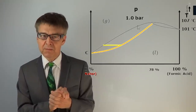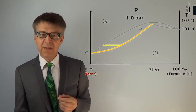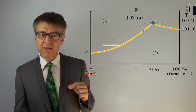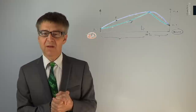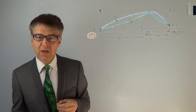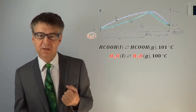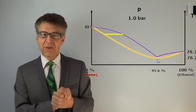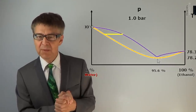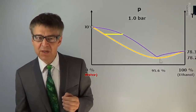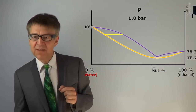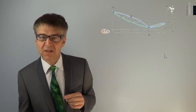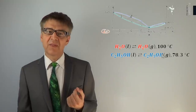Now for non-ideal mixtures. The non-ideal mixture of water and formic acid shows a phase diagram with a maximum. The peak is also called an azeotrope. At this point, bubble point curve and dew point curve intersect for a third time — the azeotrope forms the third invariant point. It boils and condenses exactly as a pure substance. Therefore, it is not possible to separate a non-ideal mixture into the pure components by distillation. The non-ideal mixture of water and ethanol shows a phase diagram with a minimum. A liquid mixture of 95.6% ethanol will boil at a constant temperature of 78.2 degrees Celsius into a gas phase which is also 95.6% ethanol. You cannot distill pure ethanol from an ethanol-water mixture.